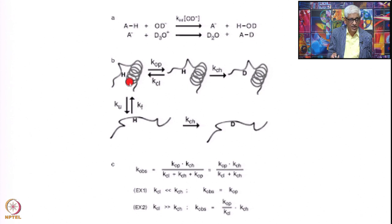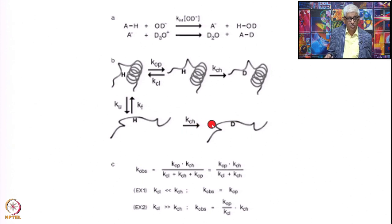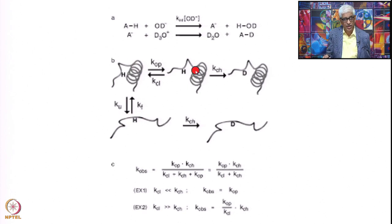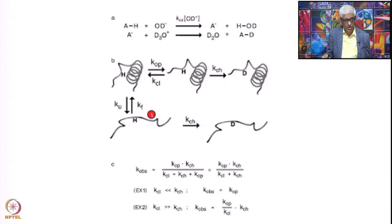If you have local unfolding, this is the unfolding rate and this is the folding rate. Once it is unfolded, exchange will happen immediately with D2O. You can also have situations where it goes from fully folded to partially unfolded to fully unfolded, or directly. Therefore the measured exchange rate is quantified accordingly. There are two kinds of mechanisms: EX1 and EX2.